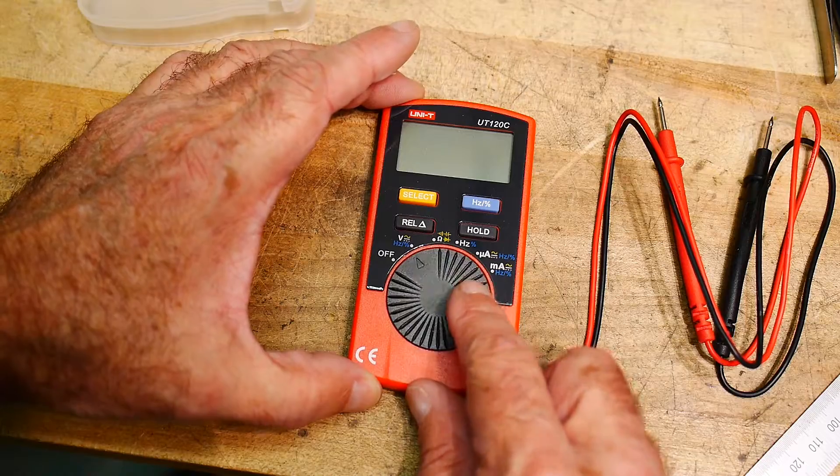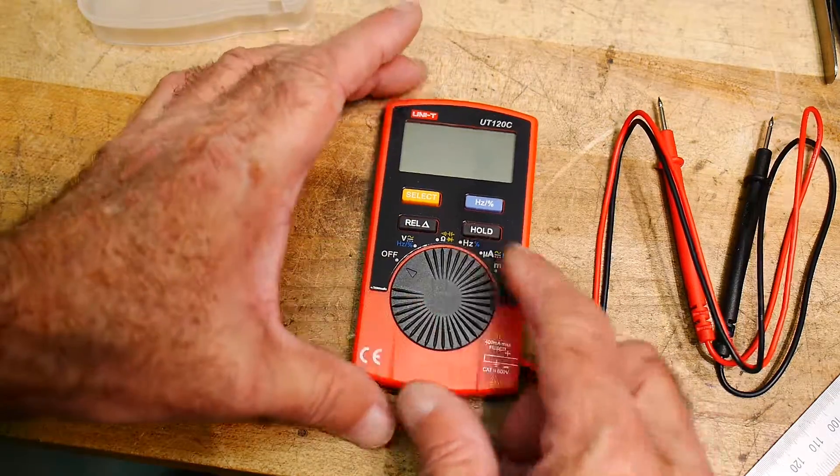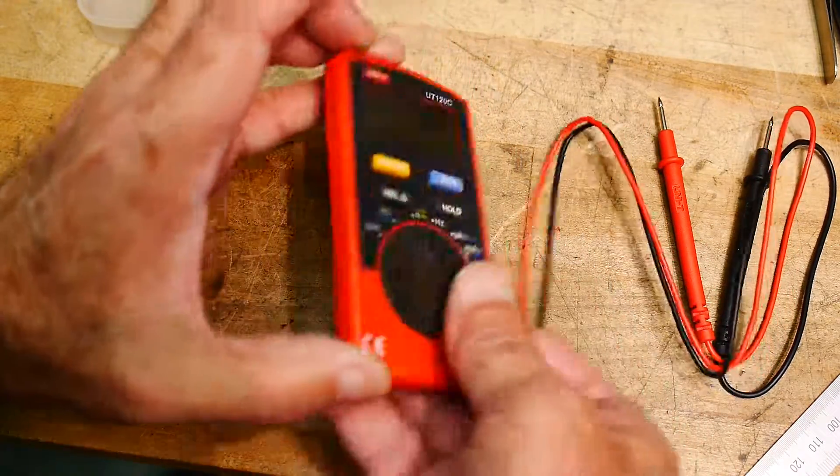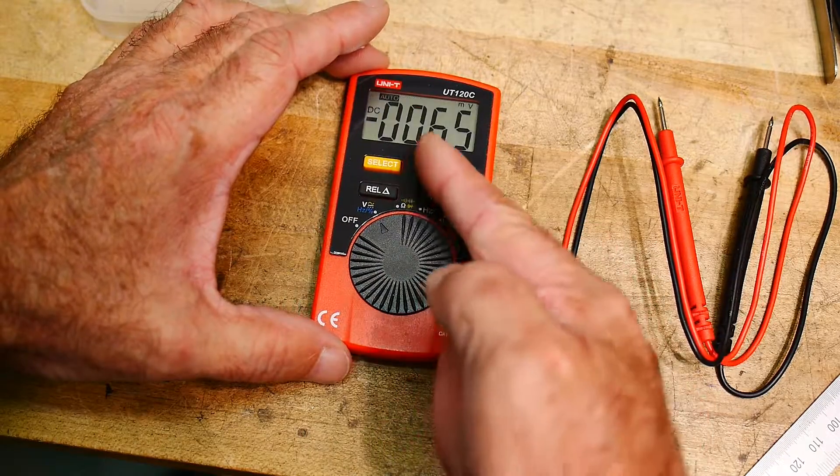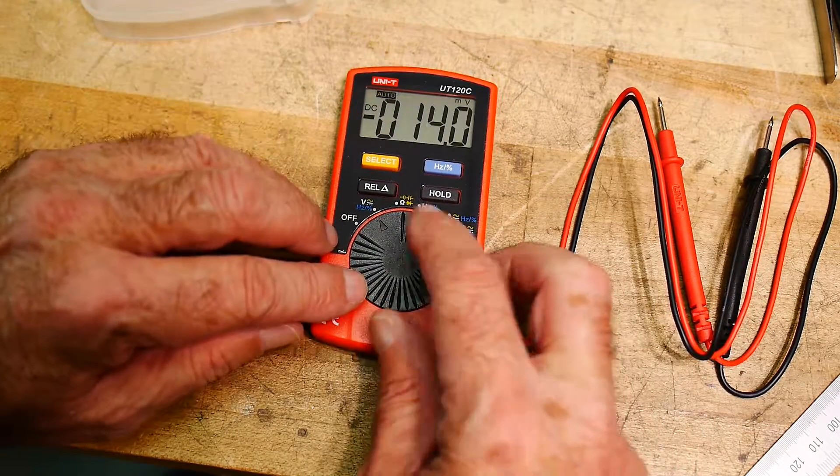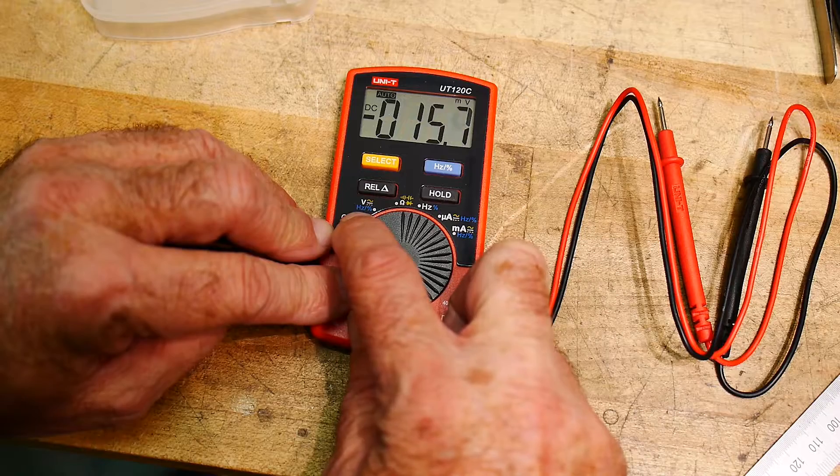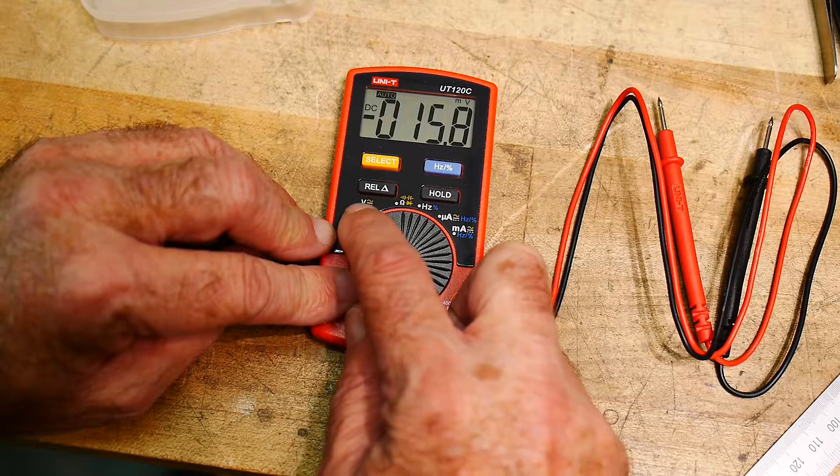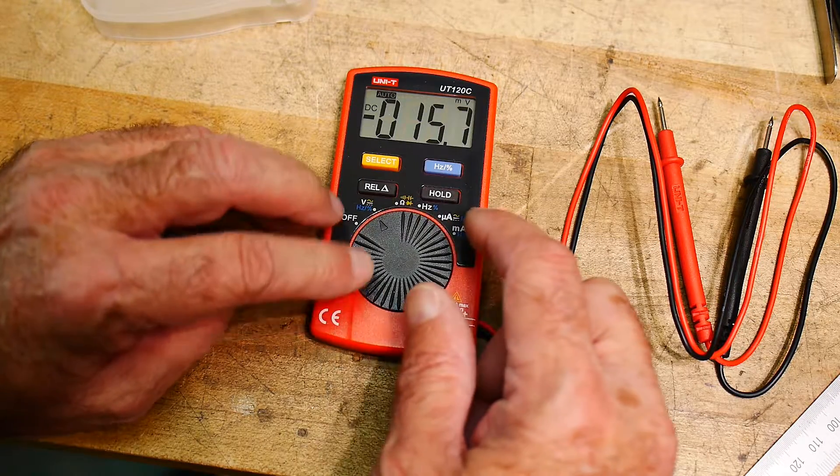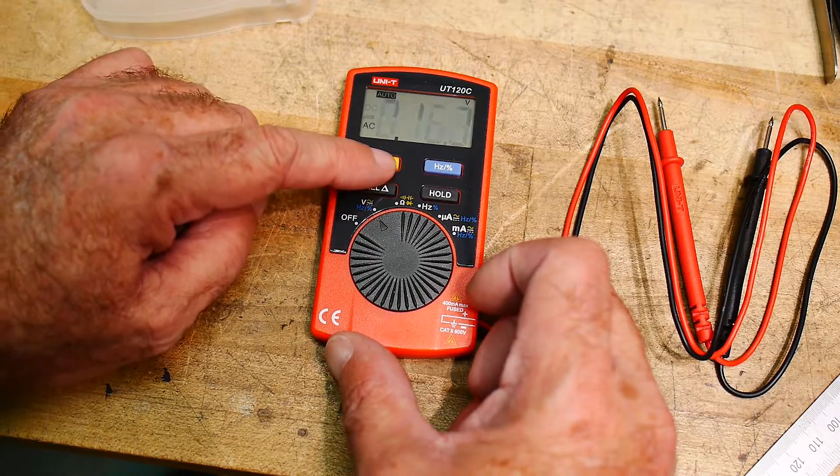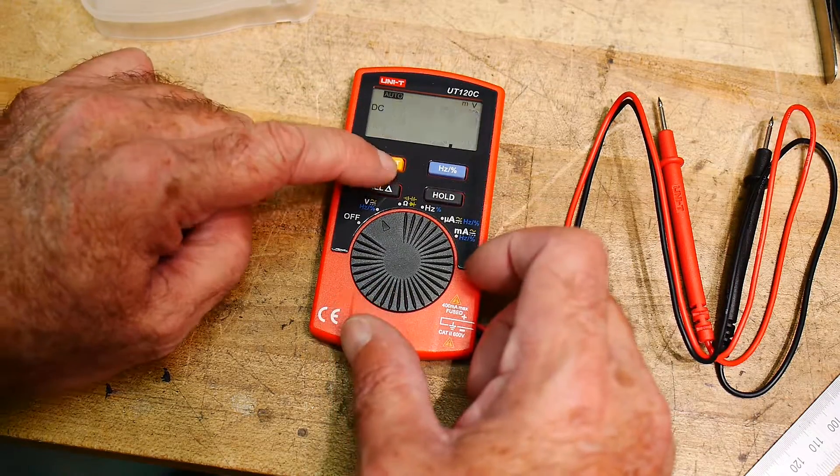To turn on, you just rotate this little wheel here. So it's very flat. You rotate it to volts, and it'll do AC DC by selecting. So that's AC, that's DC.